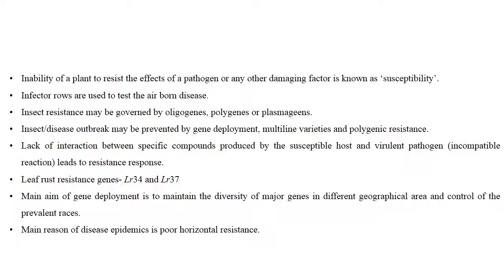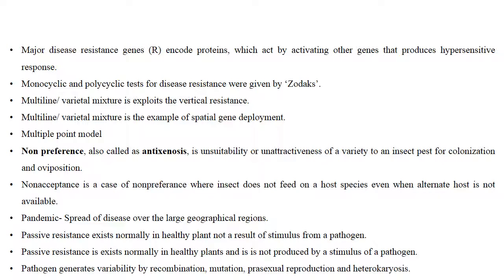The main aim of gene deployment is to maintain diversity of major genes in different geographical areas and control prevalent races. The main reason for disease epidemics is poor horizontal resistance. Major disease resistance genes — dominant R genes — encode proteins which act by activating other genes that produce a hypersensitive response. Monocyclic and polycyclic tests for disease resistance were given by Zadoks.